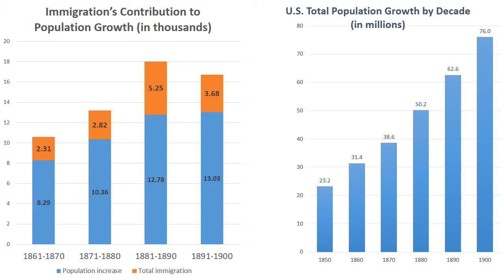One reason the population grew during the Gilded Age was the increase in the overall life expectancy of Americans. In 1870, the average life expectancy of an American was 39.4 years. By 1900, that number had risen to 48.2. Another reason for the population increase was immigration. As you can see from the graph on the left, immigration rates went up between 1861 and 1900, with the 1880s contributing the largest number of immigrants.